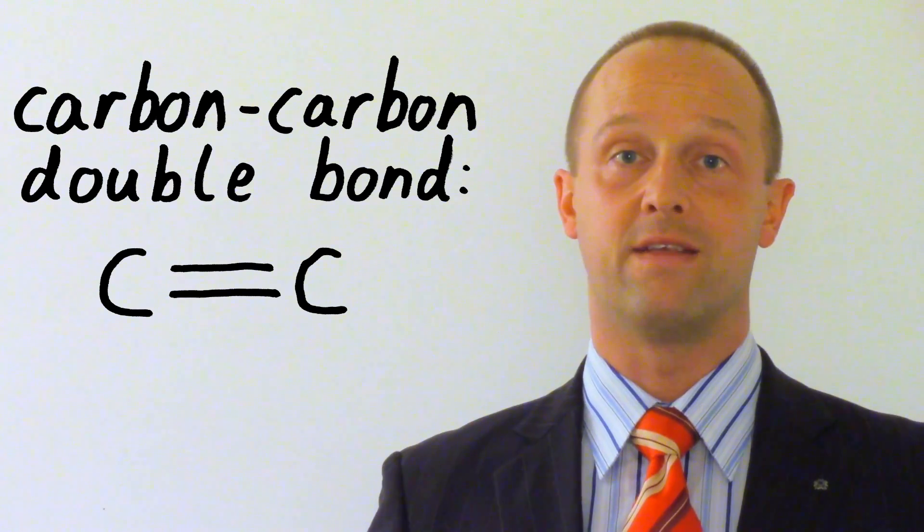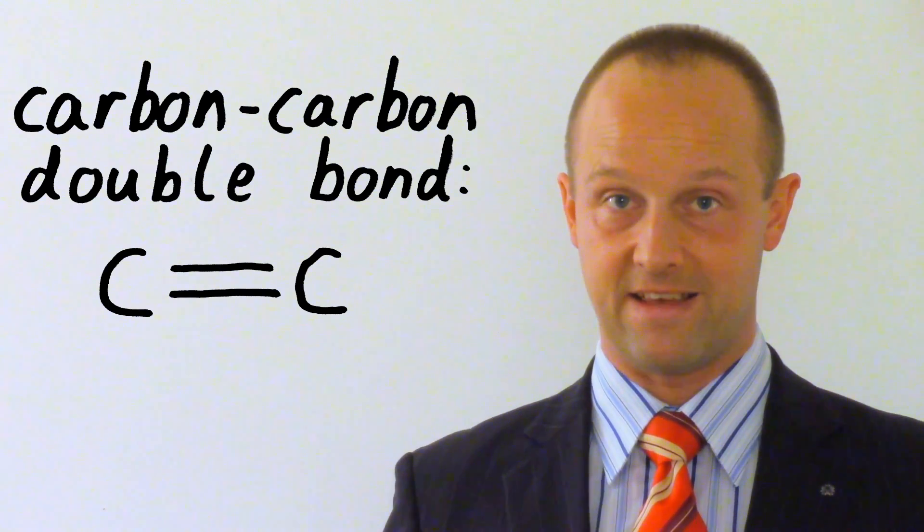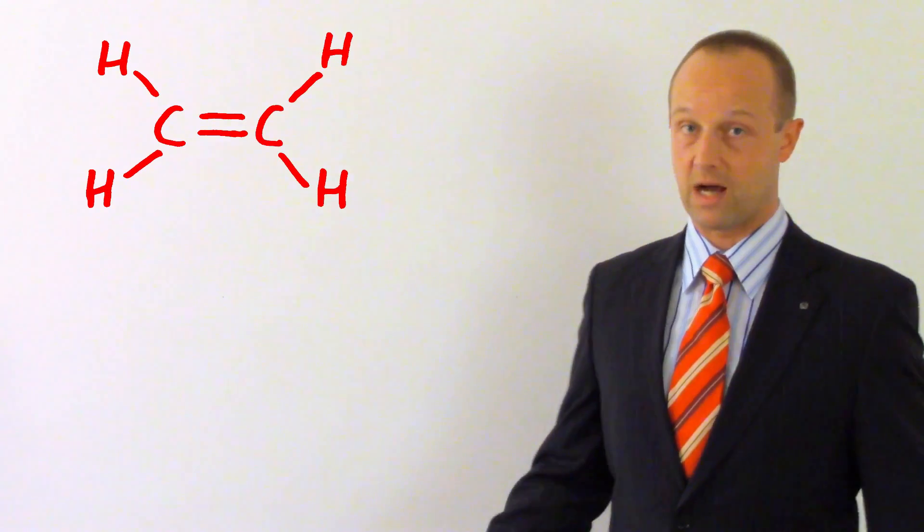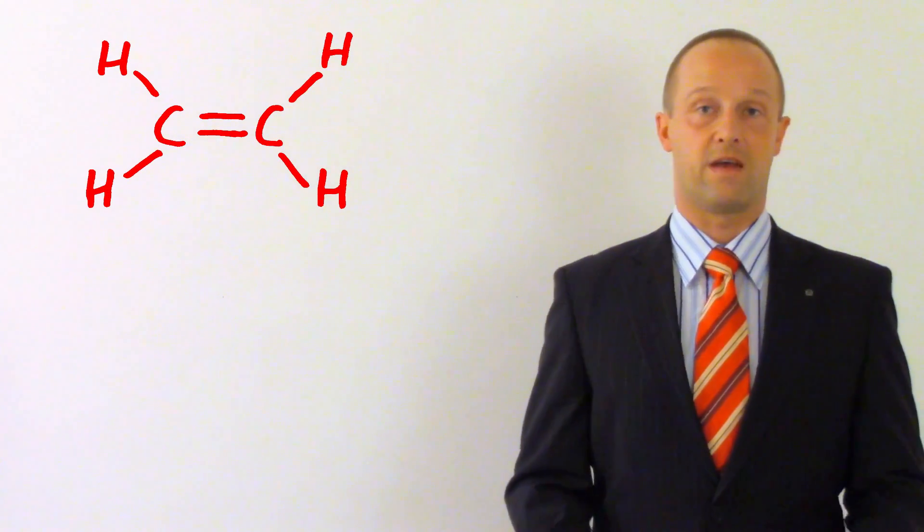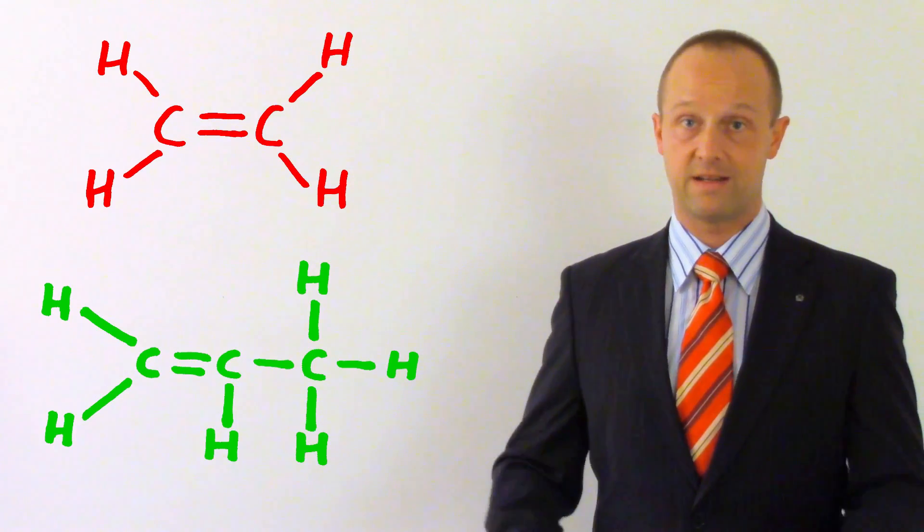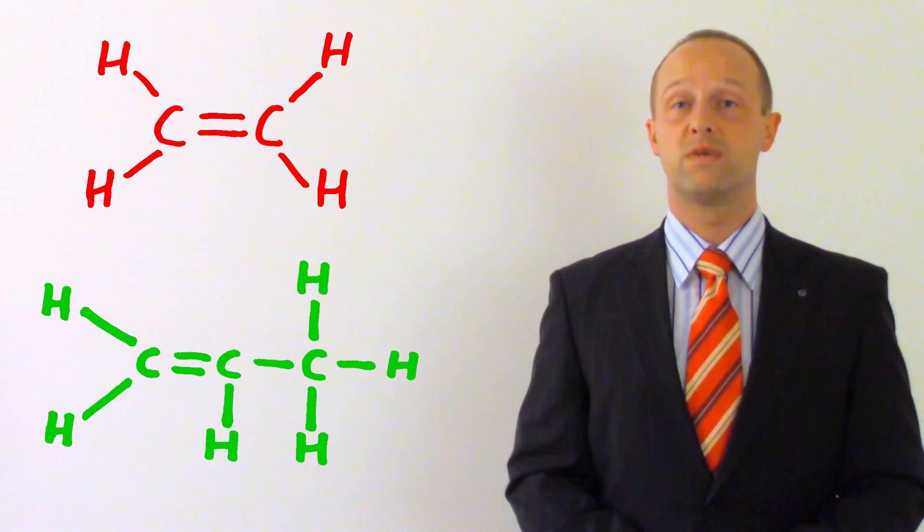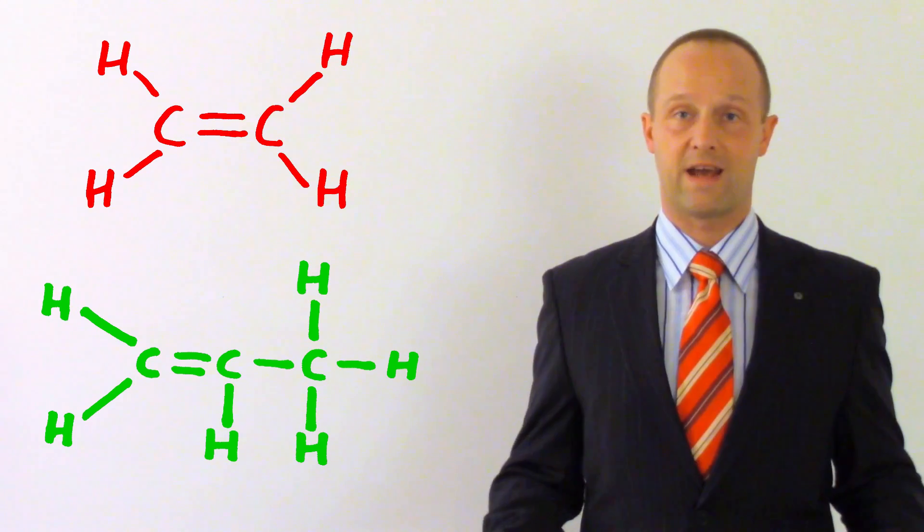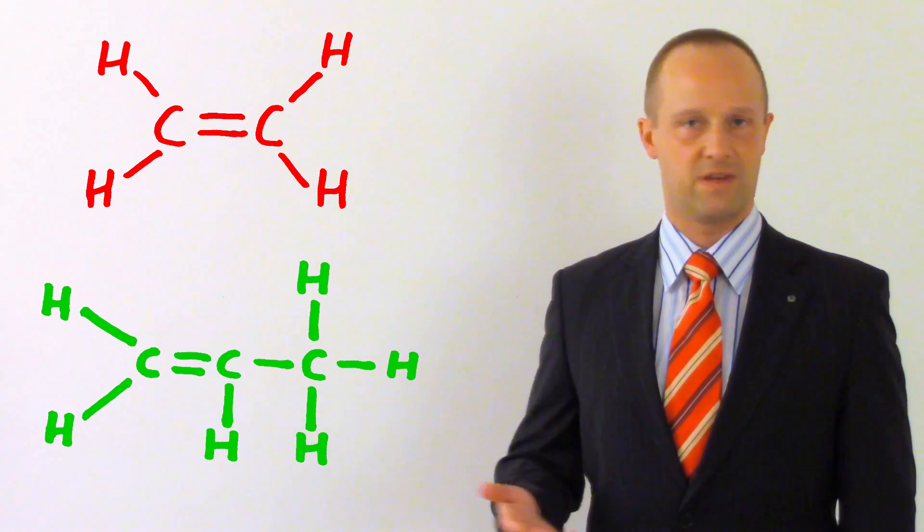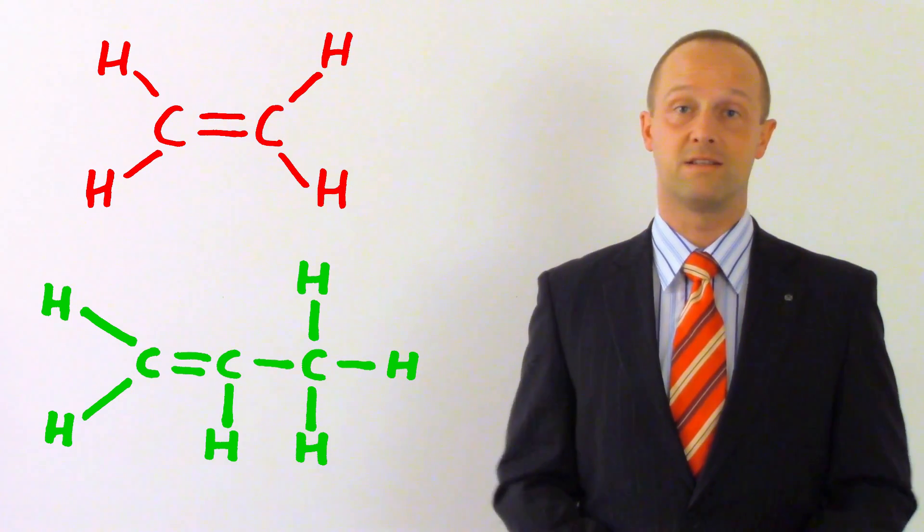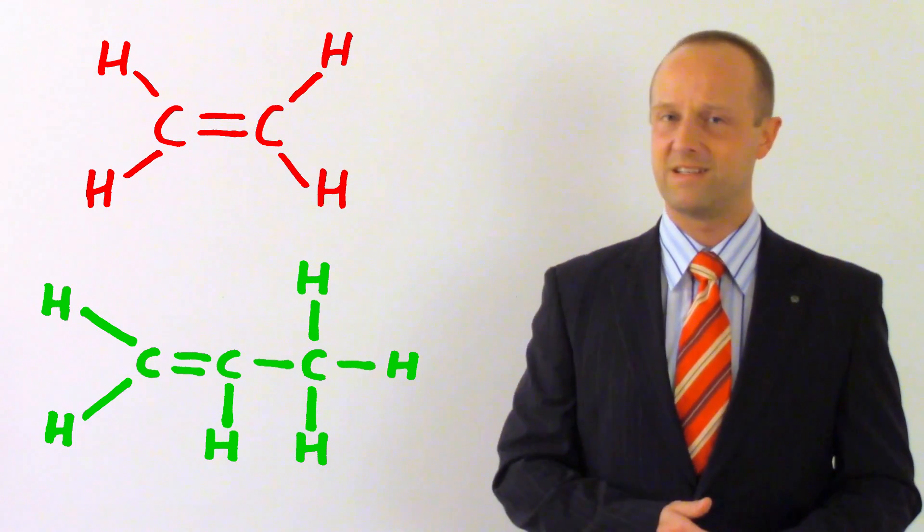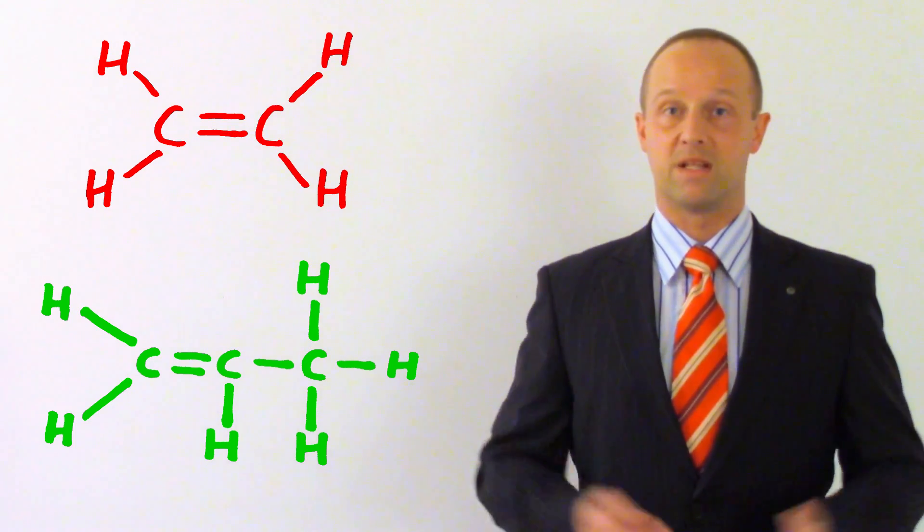All alkenes have to have a minimum of two carbon atoms, because there's got to be a bond between two of them. Your alkenes start at ethene. Two carbons in an alkene gives us ethene, three carbons gives propene, then butene, and so on. The exam boards only really seem to care that you know about ethene and propene though.